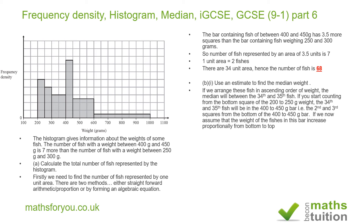Counting through the squares — one, two, three... up to 17 — the 17th square falls within a particular column. This means the 34th fish and the 35th fish are both expected to be somewhere in this column. The 34th fish is in the green section and the 35th fish is in the red section of that column.